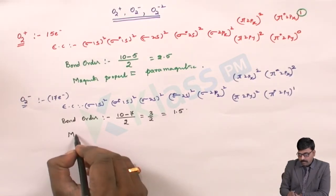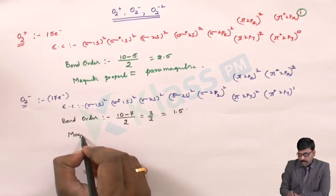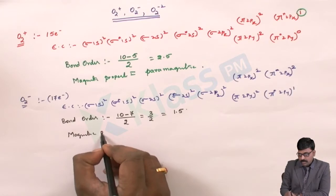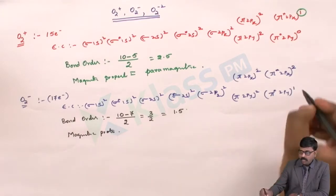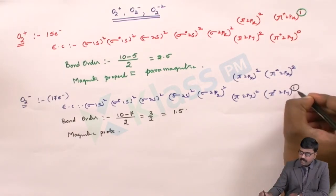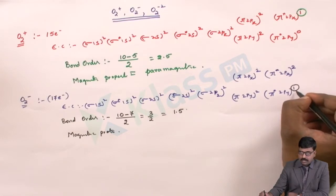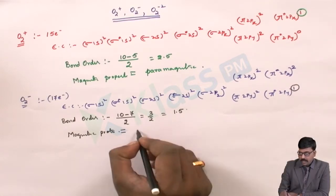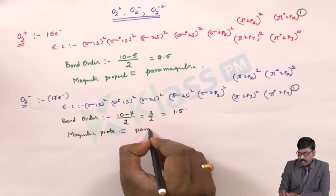For the magnetic property of O2 minus: it again has one unpaired electron, so it is paramagnetic in nature.